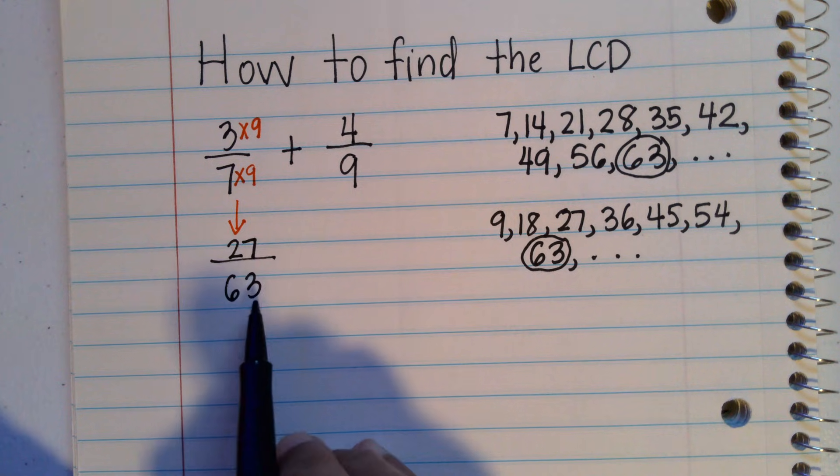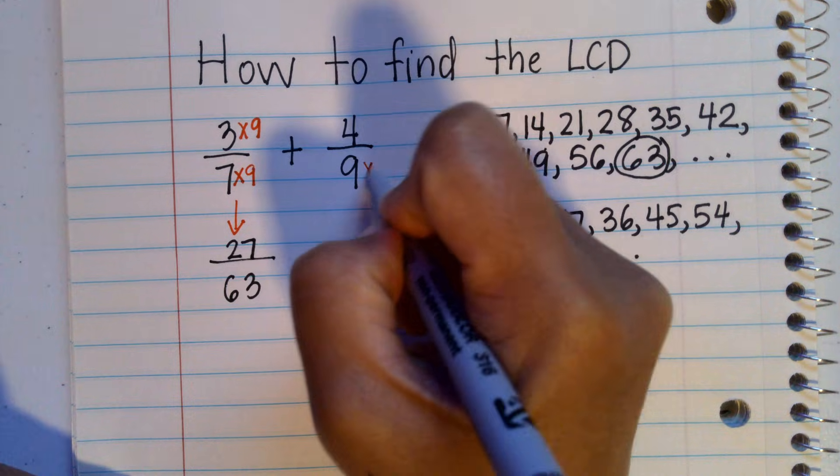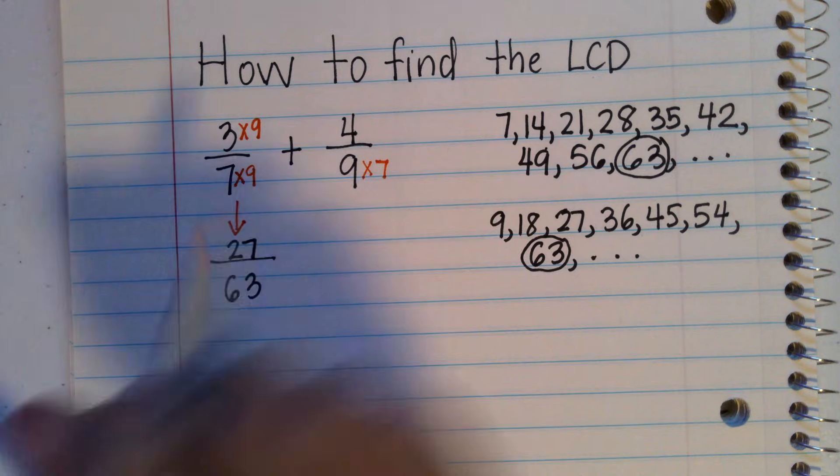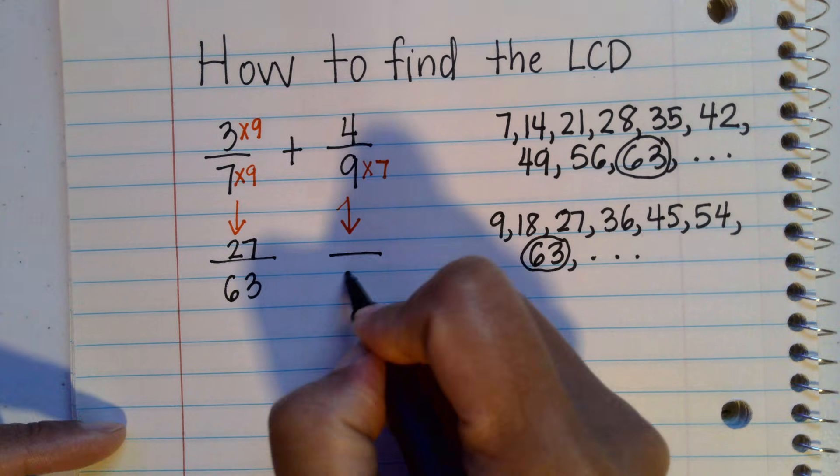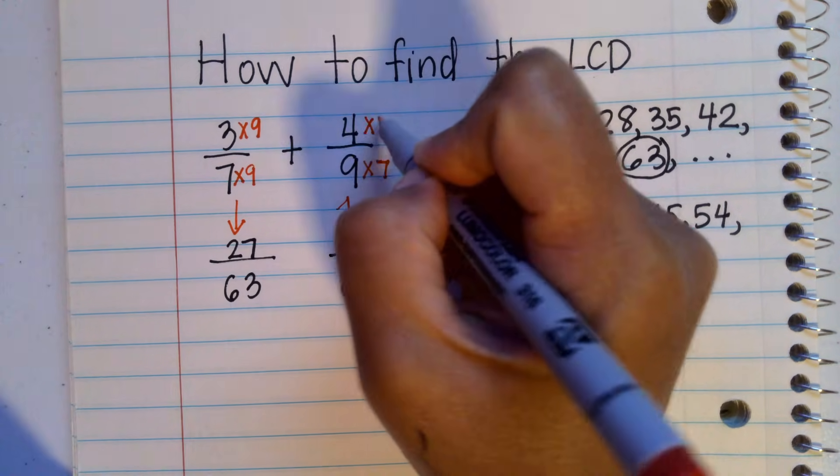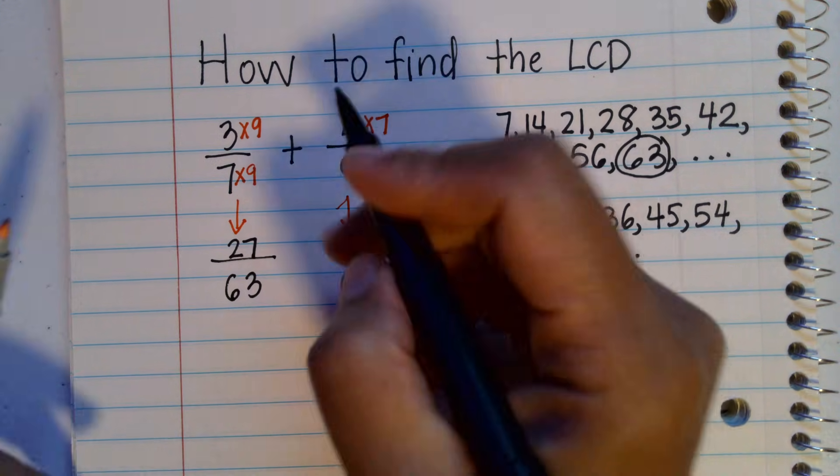For the nine, you have to multiply nine by seven to get 63 so that the denominator is 63. But since this is a fraction, you also have to multiply the numerator by seven. So you have four times seven is 28.